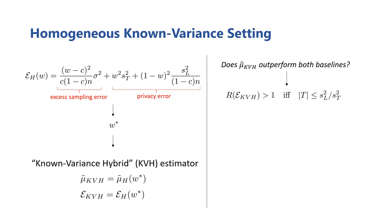Now that we've derived it, the first question we can ask is whether it actually outperforms the baselines. Algebraically analyzing the induced relative improvement expression, we find that the KVH estimator does indeed strictly outperform both baseline estimators simultaneously, as long as the number of TCM users is less than this ratio between the privacy noise scales of both groups. As it turns out, this condition isn't restrictive at all, since most common differential privacy mechanisms satisfy it — namely the Laplace and Gaussian mechanisms. Therefore, we conclude that the KVH estimator uniformly outperforms the baselines.